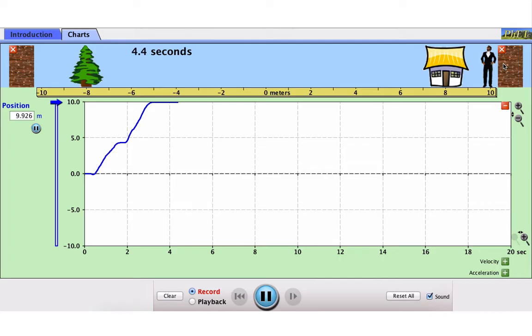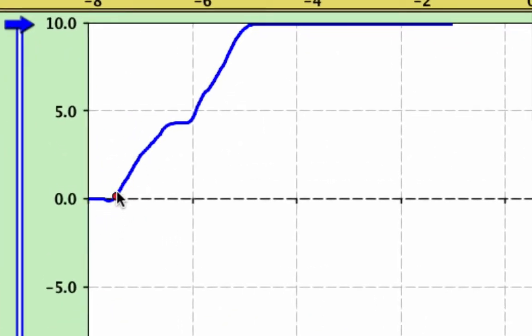So I kind of walked at a constant speed there. Notice that the line is essentially going straight up, just like we see in our notes, walking at a constant speed in one particular direction.